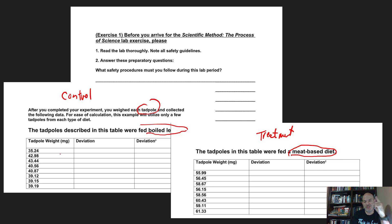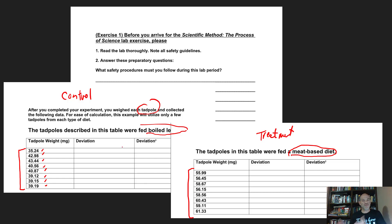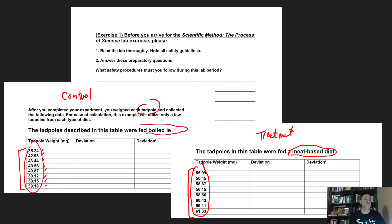Because of natural variation they didn't just test one tadpole — they used eight replicates in each group. They fed the tadpoles over a period of time, one group boiled lettuce and the other the meat-based diet, then took their weights as a measure of growth. Now you have two groups, and the easiest way to compare them is to calculate the average for each one. But looking at the numbers you can see they're variable, and this video is about how we handle that variation to determine if the groups are really different.